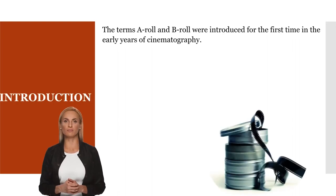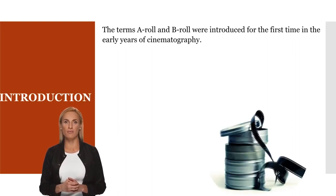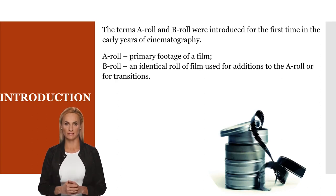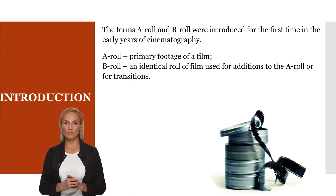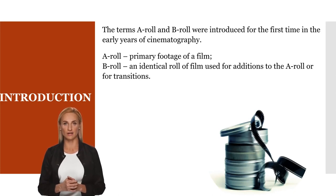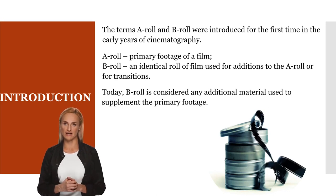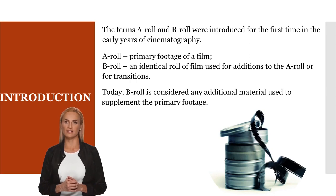The terms A-Roll and B-Roll were introduced for the first time in the early years of cinematography. A-Roll was the name given to the primary footage of a film, whereas B-Roll was an identical roll of film which was used for additions to the A-Roll or for the making of transitions. The term A-Roll has gradually fallen out of use. Today, B-Roll is considered any additional material used to supplement the primary footage in order to enhance storytelling or to support your point of view.